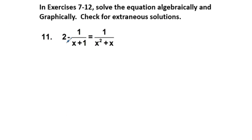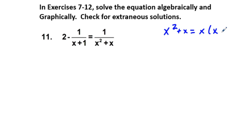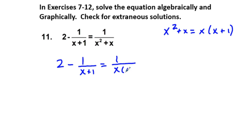The next and last problem is 11. We have 2 minus 1 over x plus 1 equals 1 over x squared plus x. In clearing the denominator, if we multiplied everything by x plus 1, we would clear out the denominator in the second term but not the term on the other side. But x squared plus x can be factored with a common factor of x, giving us x times x plus 1. So we rewrite this as 2 minus 1 over x plus 1 equals 1 over x times quantity x plus 1.